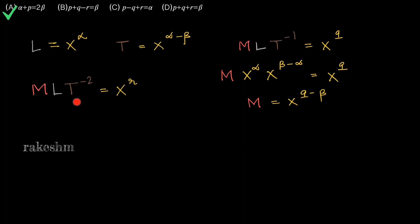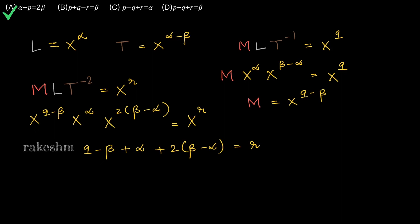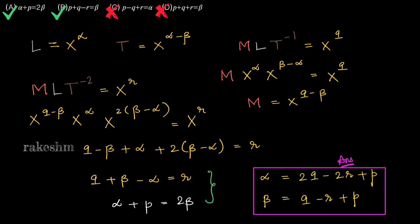We are given force as x power r, so M L T power minus two equals x power r. We substitute L, T, and M from the three equations into this expression, equate the powers of LHS and RHS, and simplify. This gives us a relation between alpha, beta, q, and r. He has asked for relations between p, q, r, beta, and p, q, r, alpha. Solving these two equations for alpha and beta, we get alpha as 2q minus 2r plus p, and beta as q minus r plus p. We get option B as correct, and options C and E as wrong.